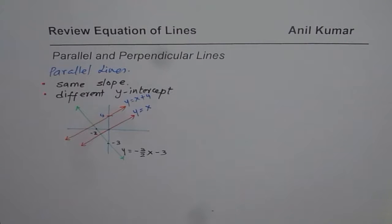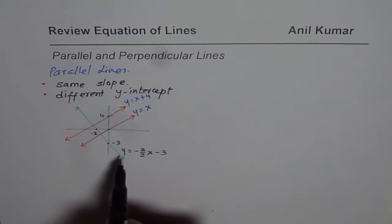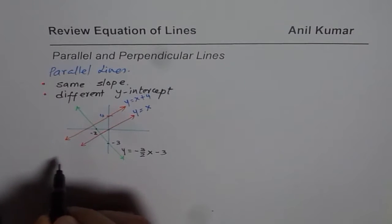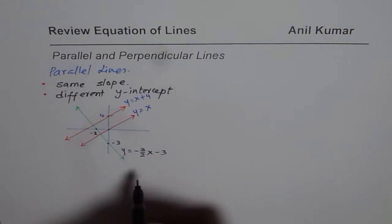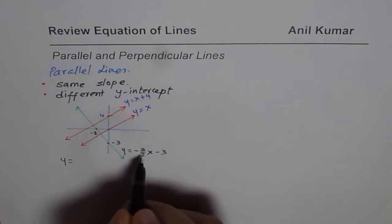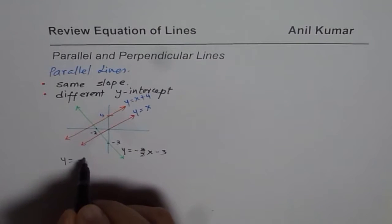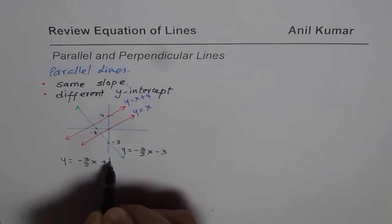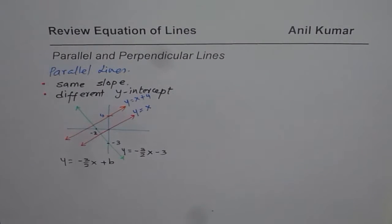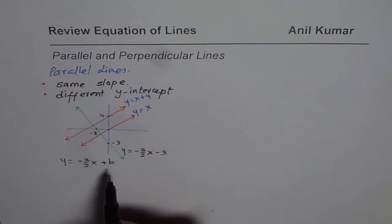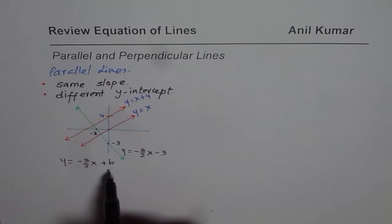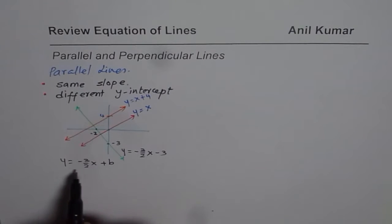Can you tell me the equation of a line which is parallel to this green line? The equation of a parallel line should have the same slope, so y equals minus 3 over 2x, but it could have any other y-intercept. If we know that the line passes through a particular point, we can easily find the y-intercept and write down its equation.